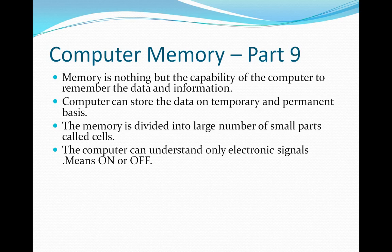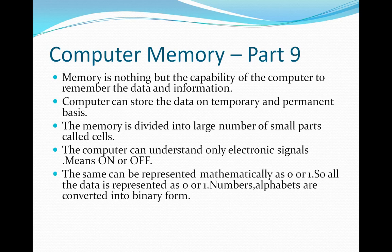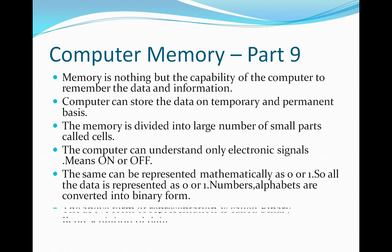The same can be represented mathematically as zero or one. All the data is represented as zero or one. Numbers, alphabets are converted into a binary form. Whatever data you enter from your keyboard will be converted into electrical signals in the form of on and off, or it can be in the binary format like zeros or ones. This form of representation is called binary representation form.